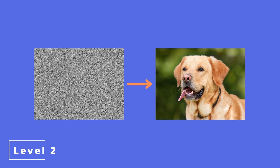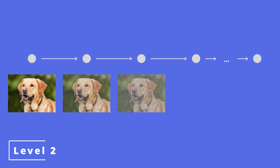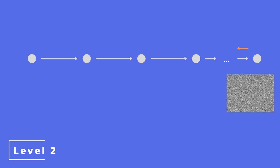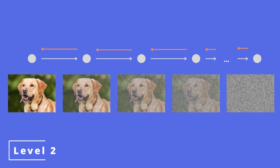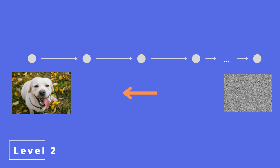So a diffusion model is a Markov chain where in each time step we add a little bit of noise to our image until the image only consists of noise, and later we learn how to reverse this noise-adding process. After it is trained, given only noise, this model is able to generate high resolution images.